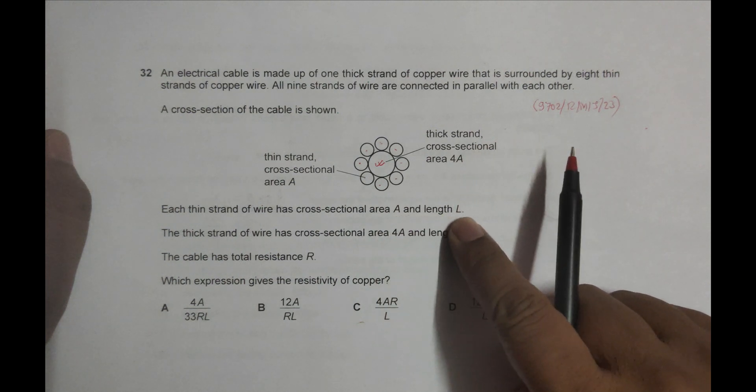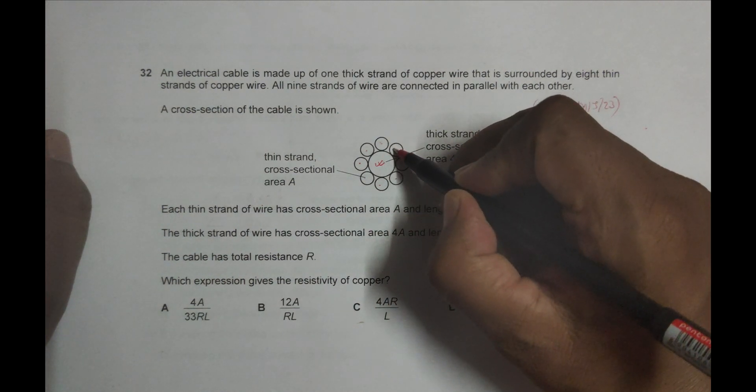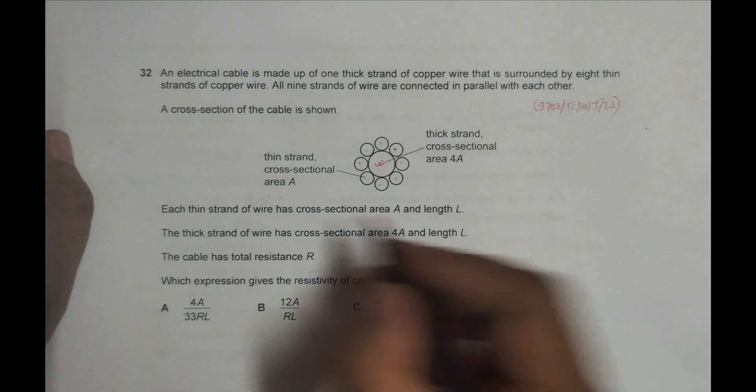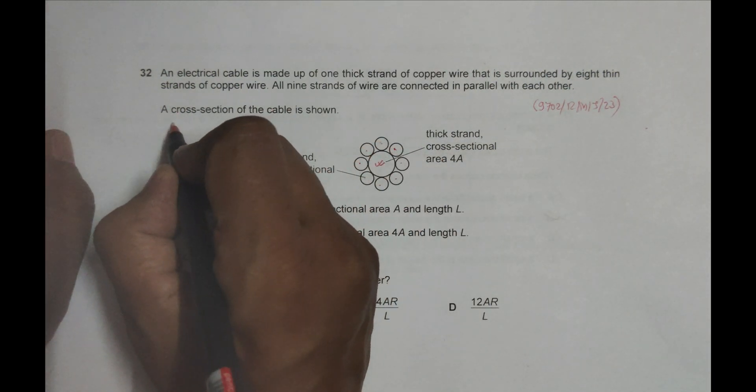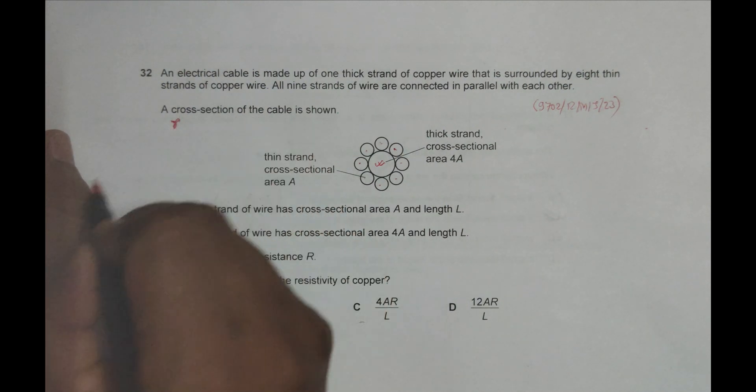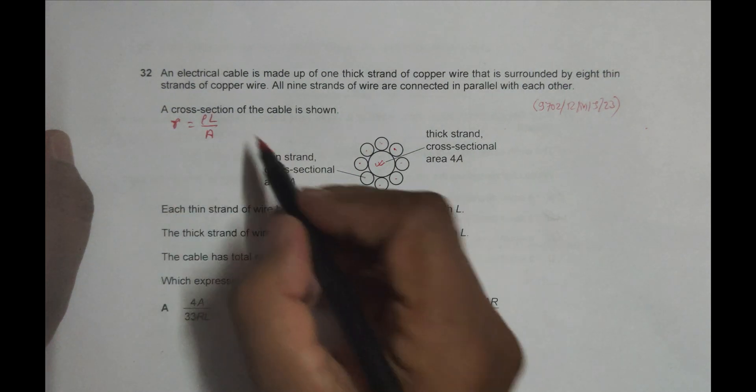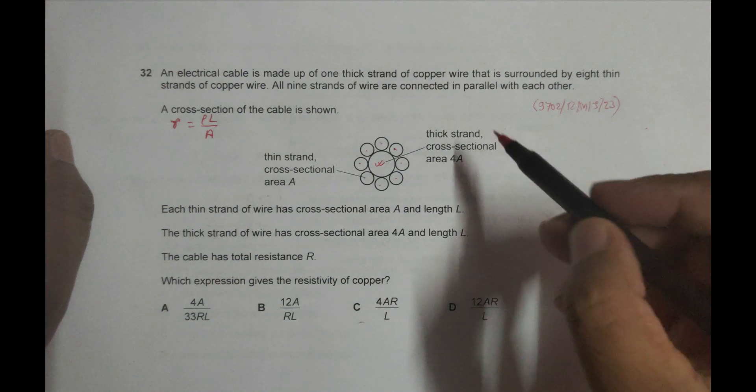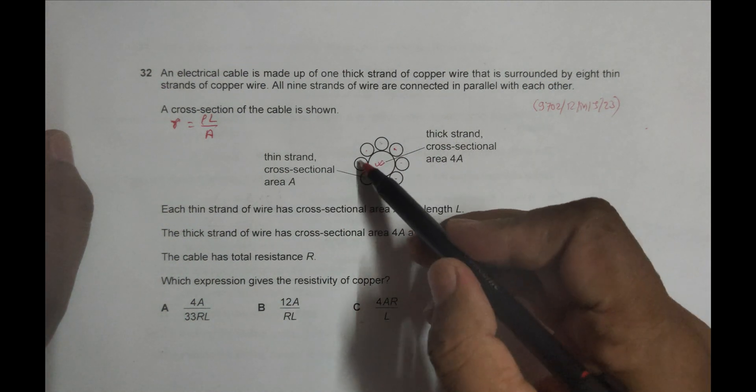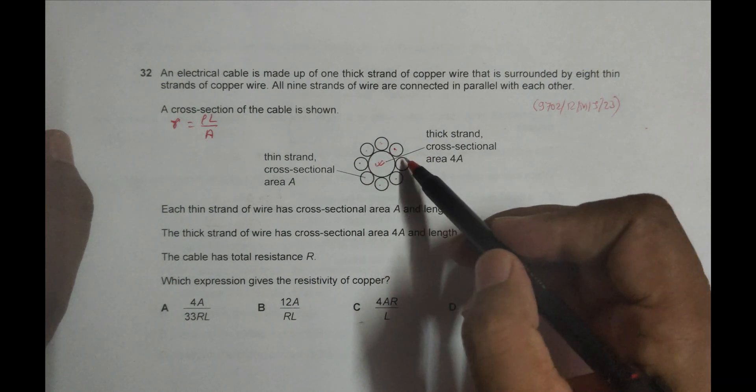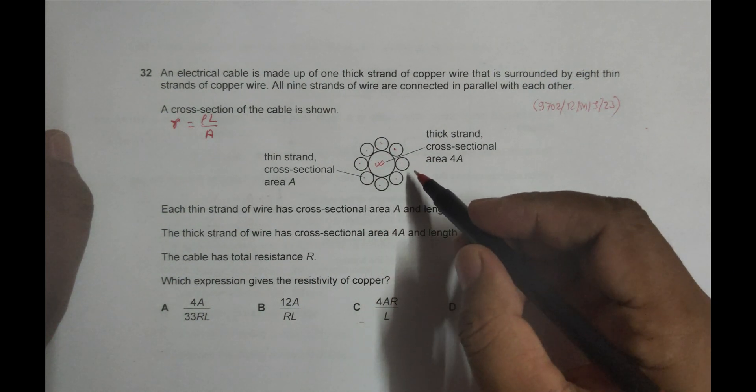A cross section of the cable is shown here. Each thin strand of wire has cross-sectional area A and length L. So the resistance should be R thin equals ρL/A. The formula is ρL/A.